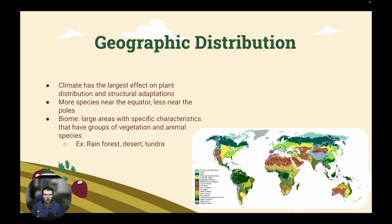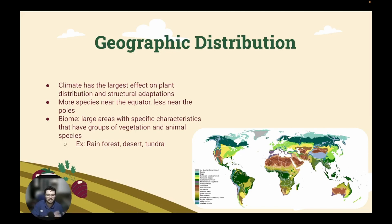So very cold, very barren lands. The reason we're so interested in geographic distribution is because climate has the largest effect on plant distribution and structural adaptations. As we look at the diversity of plants, basically what we're looking at is what is their climate like, and then we see that they have adapted to that climate to survive and reproduce there. In general, what we see is that we have more species near the equator and less near the poles.